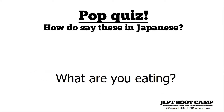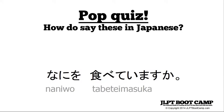Last one: what are you eating? The answer would be 'nani o tabete imasu ka.' 'Nani o' — you're asking about the object of the sentence. 'Tabete imasu' is the '-ing' form — you change the verb into the te-form, add 'imasu,' and that's the '-ing' meaning what are you doing, what are you eating. 'Ka' is the question-marking particle.